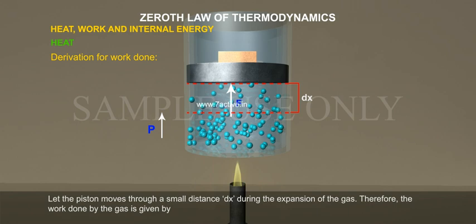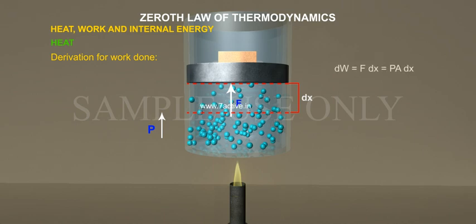Therefore, the work done by the gas is given by dW is equal to F dx is equal to PA dx. Since A dx is equal to dV, change in volume, dW is equal to P dV.